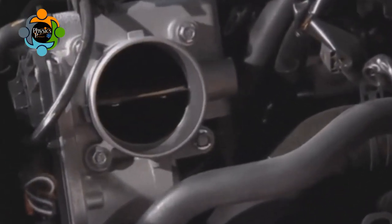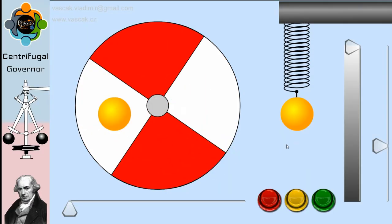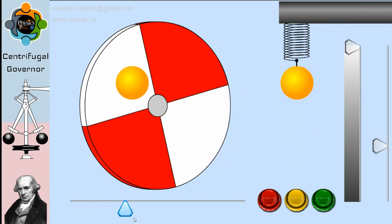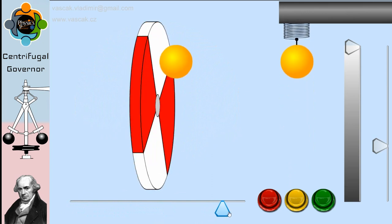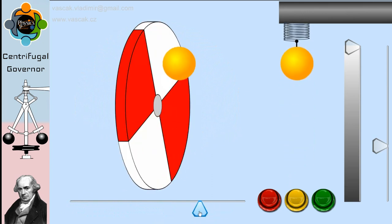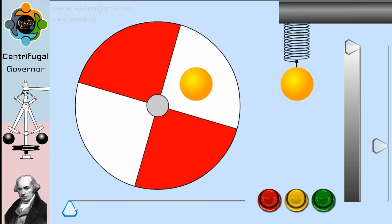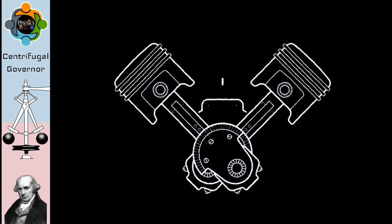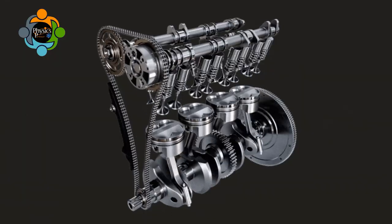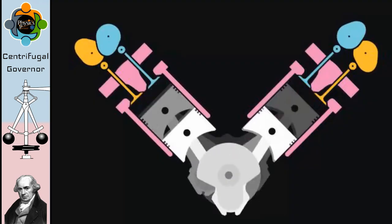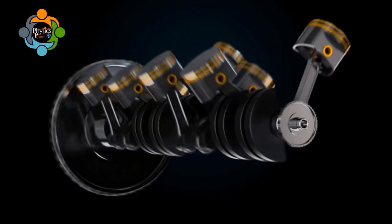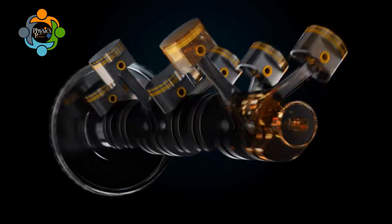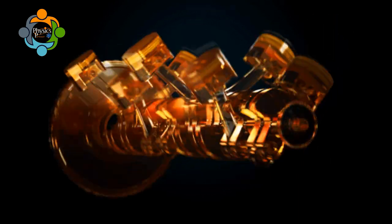The science behind the centrifugal governor is based on the principle of centrifugal force, which is the outward force that acts on an object moving in a circle. As the engine speed increases, the weights on the governor arms move outward, causing a linkage to move the throttle, which decreases the flow of fuel to the engine.